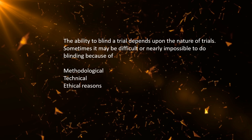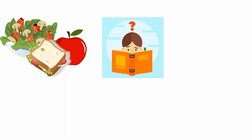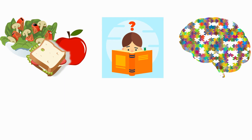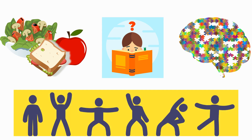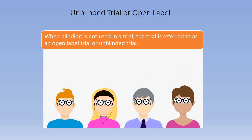Blinding is not possible in situations when subjects are assigned to trials involving dietary, educational, behavioral or psychological, exercise or rehabilitation interventions. When blinding is not used in a trial, it is referred to as an open-label trial or unblinded trial.